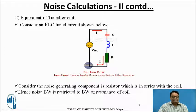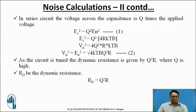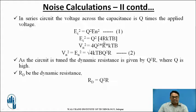The noise bandwidth is restricted to the bandwidth of resonance of the coil. In a series circuit, the voltage across the capacitance is Q times the applied voltage. Hence it is given by EC² = Q² × EN², where EN² is the RMS noise voltage given by 4RKTB.